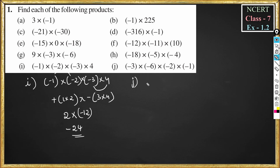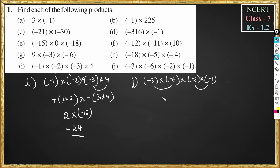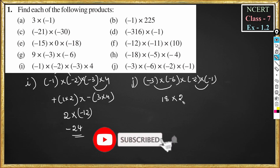Part j: minus 3 into minus 6 into minus 2 into minus 1. First multiply these pairs: minus into minus is plus, so 3 into 6 is 18, and minus into minus is plus, so 2 into 1 is 2. So this becomes 18 into 2, which is 36.